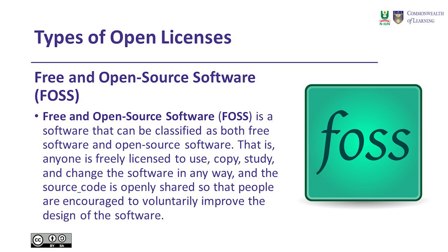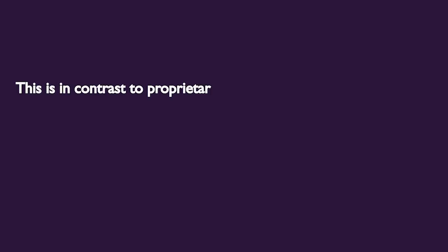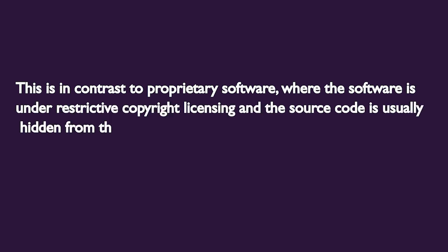Free and Open Source Software is software that can be classified as both Free Software and Open Source Software. That is, anyone is freely licensed to use, copy, study, and change the software in any way, and the source code is openly shared so that people are encouraged to voluntarily improve the design of the software. This is in contrast with proprietary software, where the software is under restrictive copyright licensing and the source code is usually hidden from the users.